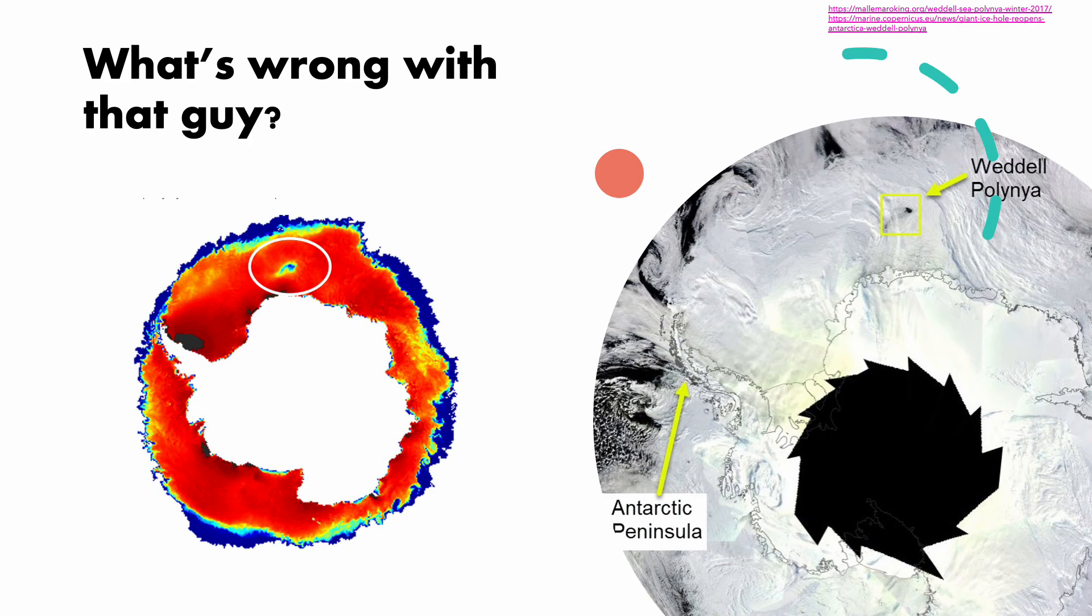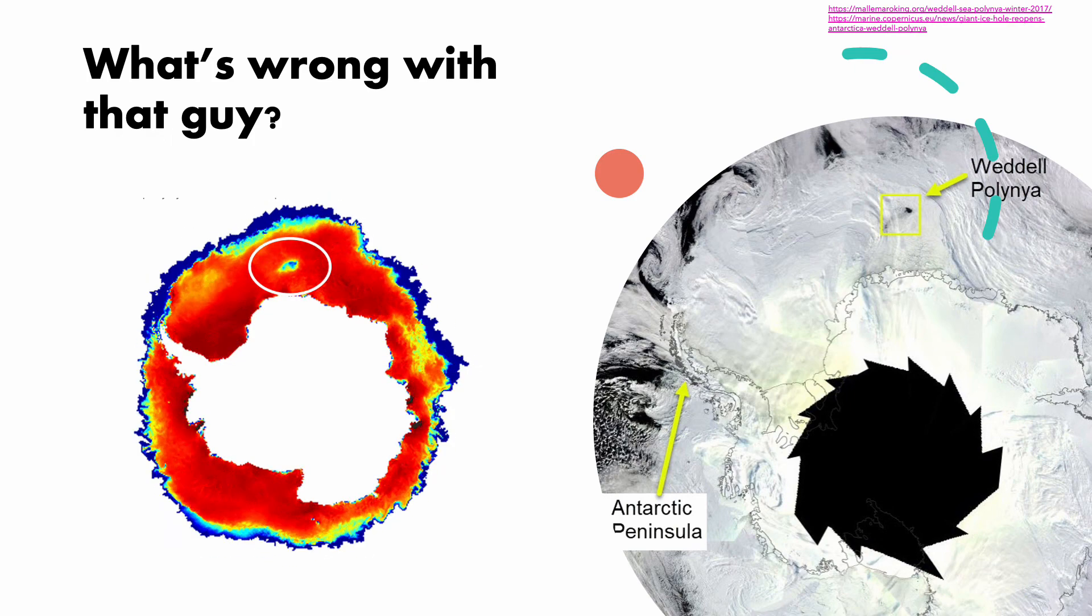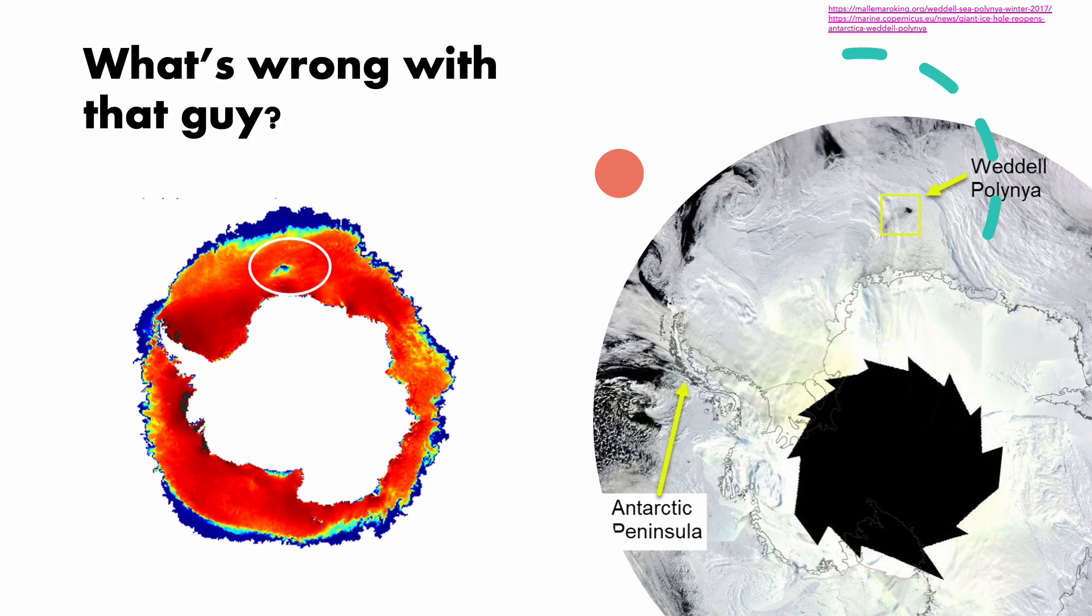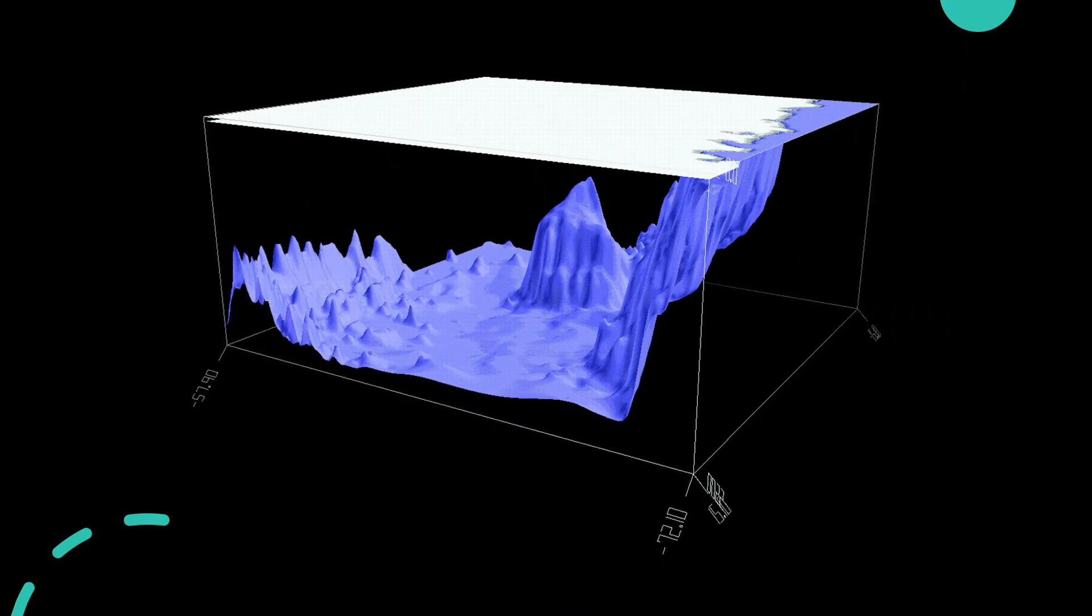In 2001, David Holland showed with computer simulations why we should take a look at the subsurface and the reason for the polynya. Because it turns out that the massive seamount, Maud Rise, is causing the polynya.